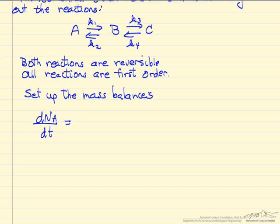So A is going to be reacting to form B by this first reaction, and we have the rate constant, and we have the negative sign because A is being used up. And then B is going to react in the reverse reaction to form A.